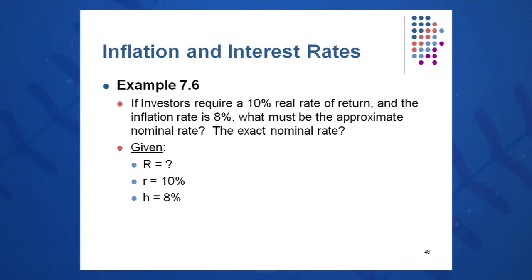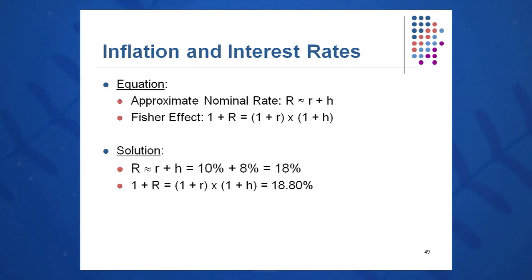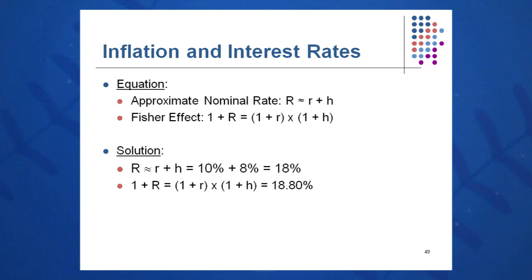Investors require a 10% real rate of return in this example, and inflation is 8%. What is the exact nominal or total rate? We're looking for big R. Given a real component little r of 10% and an h of 8%, adding them together gives an approximate answer of 18%. Taking the exact Fisher Effect — plugging in the mathematics — we get 18.8%. So not a bad estimate using the approximate Fisher Effect.